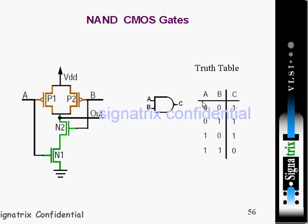This is the truth table of the NAND gate. When you are applying zero, zero, you should get one. When you apply zero at both inputs, both PMOS transistors are ON, so VDD is connected to the output and during that time you will get one.